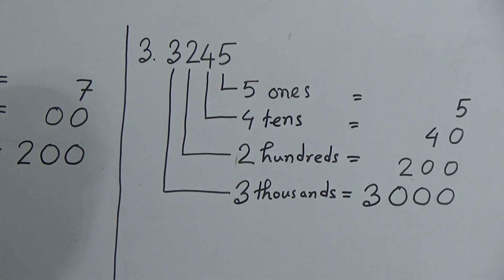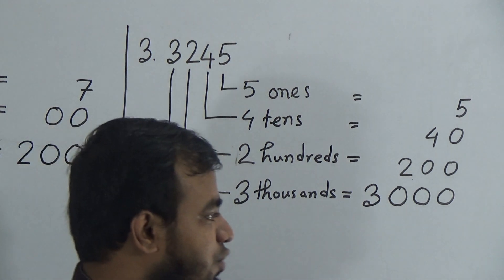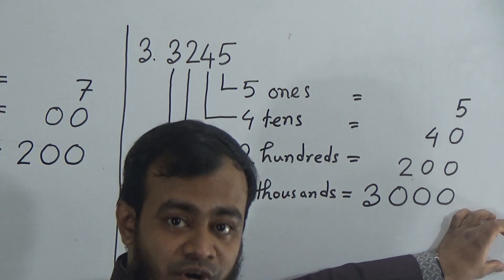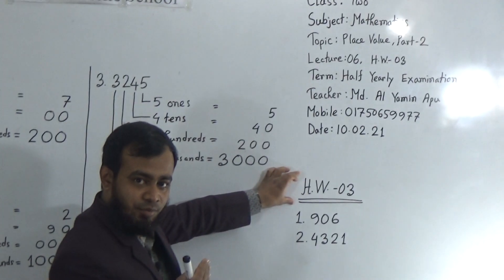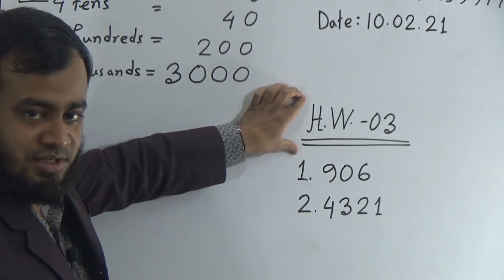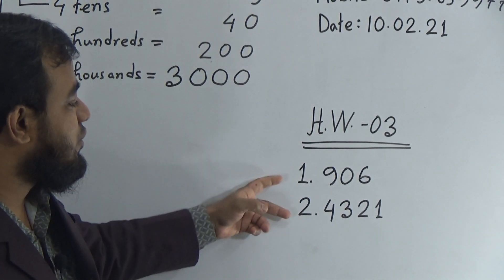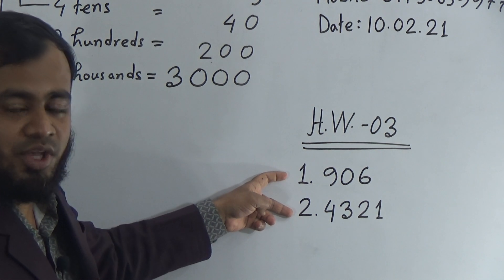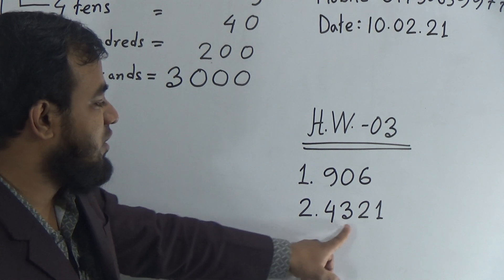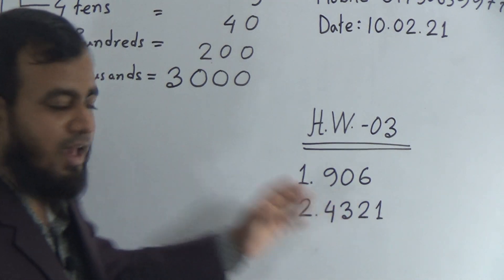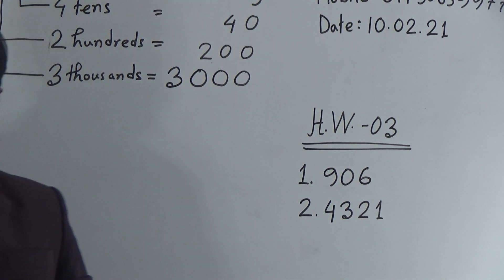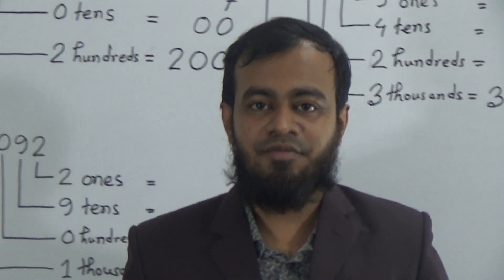My dear students, I think you have understood today's lecture. We have homework today — homework number 3. Please give the homework number in your homework copy. Write HW3 in the left corner. You should do these 2 homework problems: find the place value of 906 and the place value of 4321, like my writing on the board. You can submit your homework copy every Saturday.